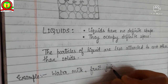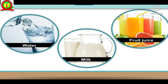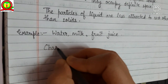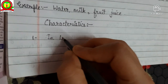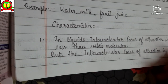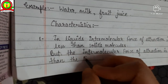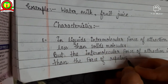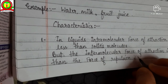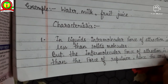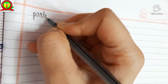Now we move on to liquids. Liquids have no definite shape but they occupy definite space. The particles of liquids are less attracted to each other than solids. For example, liquids like water, milk, and fruit juice. The first characteristic of liquids is that the intermolecular force of attraction is less than solid molecules, but the intermolecular force of attraction is more than the force of repulsion.